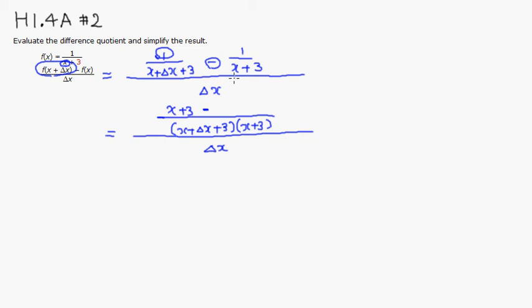Since we multiply x plus 3 by quantity x plus delta x plus 3, we're going to have to multiply the top by the same thing. So it's going to be x plus delta x plus 3. Then you notice that here you have x right here, then minus x, so x minus x cancel out.